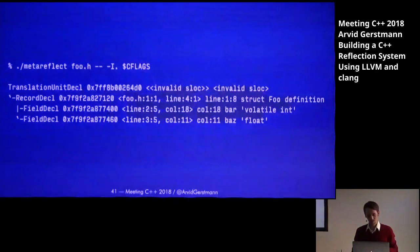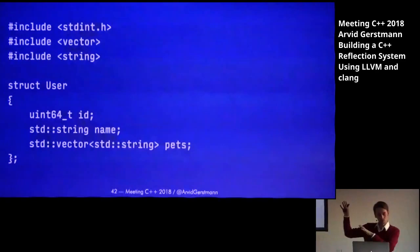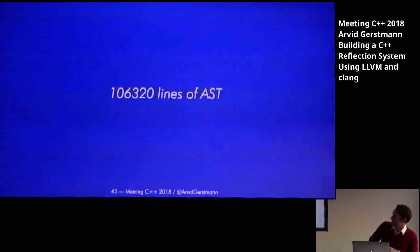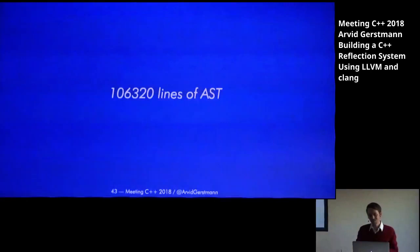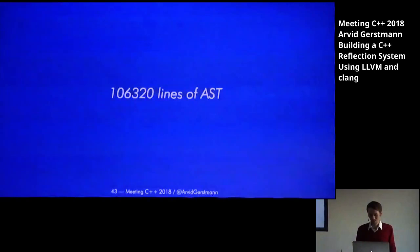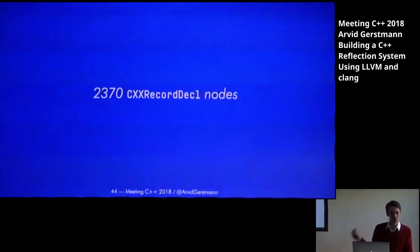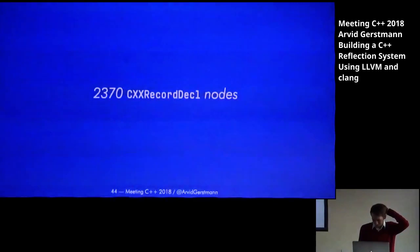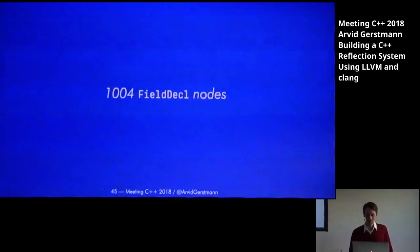Let's take struct user — the struct we've talked about the whole time. Want to see the results when we run that through our little AST dumper? I wanted to show that, but I couldn't find a program which could actually render it — it's 106,000 lines of AST. Those headers expand to quite a lot of code. And if we try to count how many records are in there, we can see that those are just 2,000 little structures and classes, with roughly over 1,000 fields. We definitely need a better plan — we can't reflect 2,000 structs.